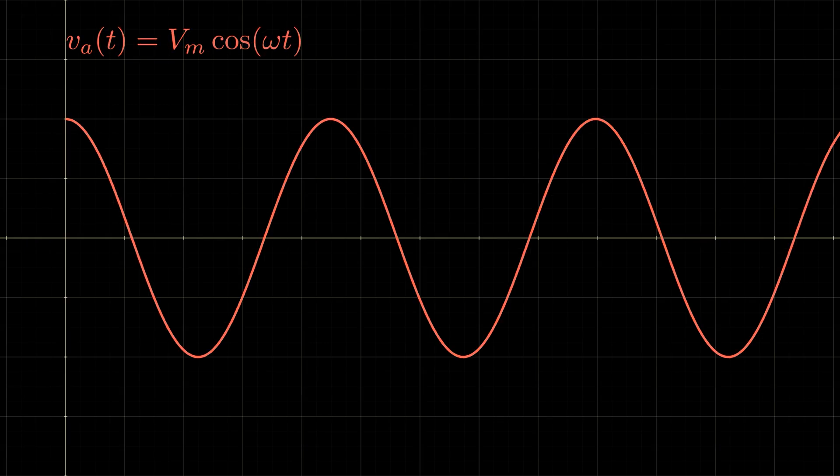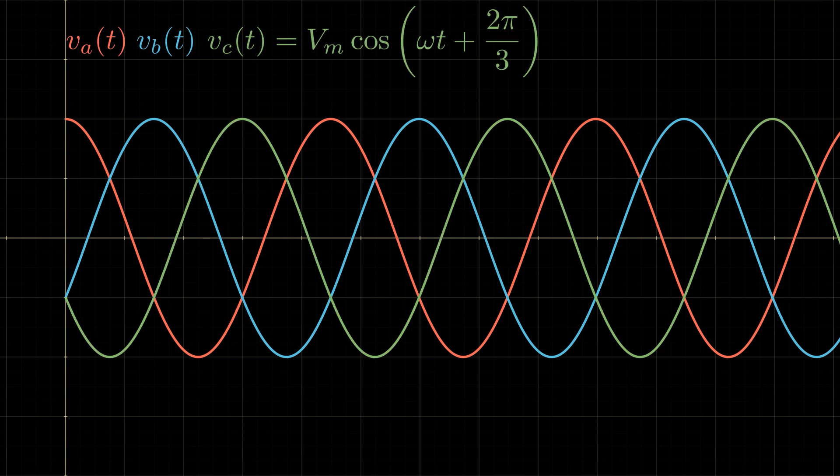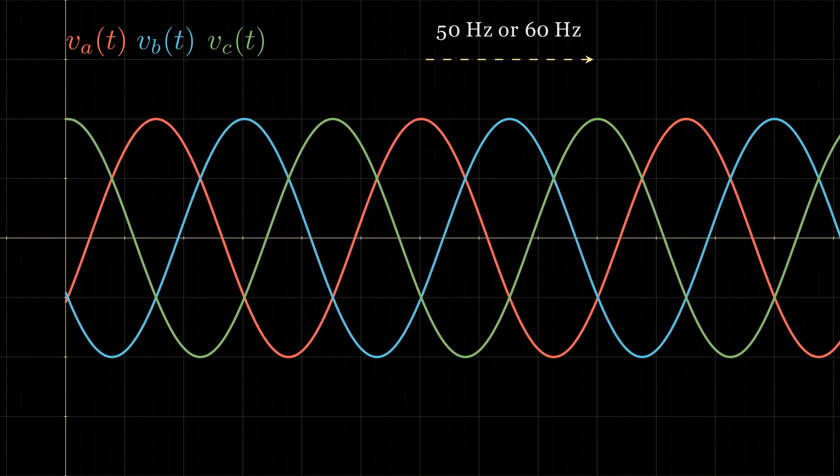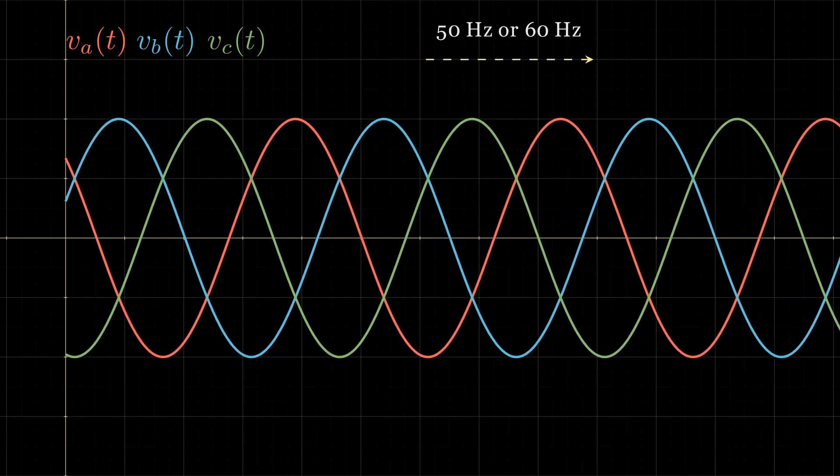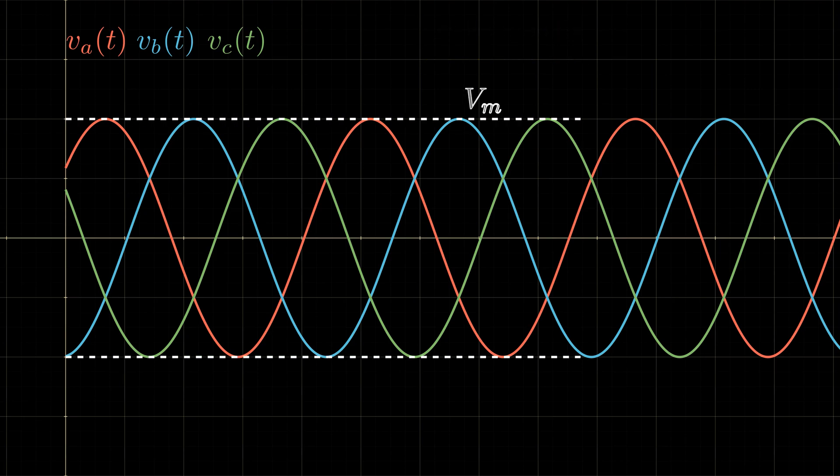Let's begin by drawing the three balanced voltages over time. These are three identical sine waves, each perfectly shifted from the others by an angle of 2π/3, which means their phasors are evenly spaced around the circle in the complex plane. They all oscillate at the same frequency, either 50 or 60 hertz depending on which side of the planet you're on, and they all share the same magnitude Vm.